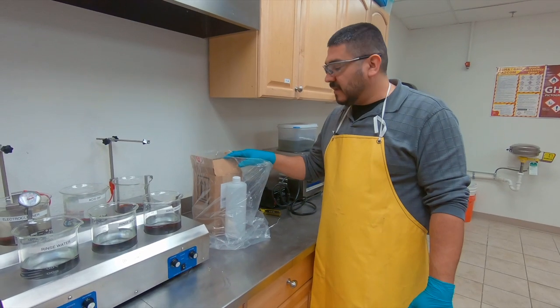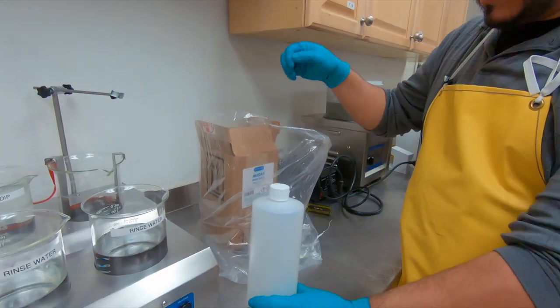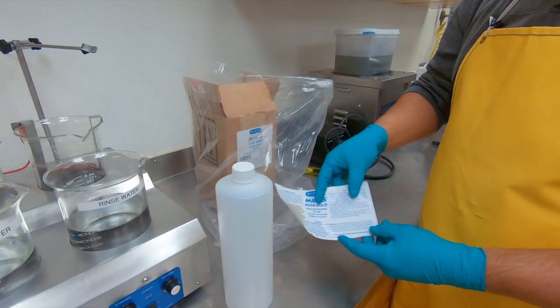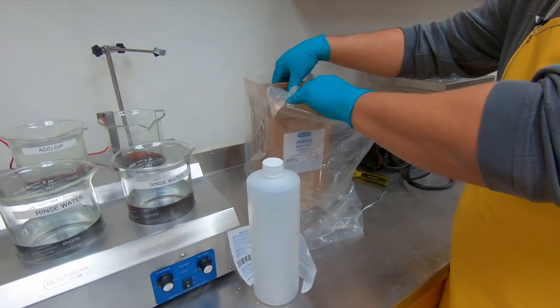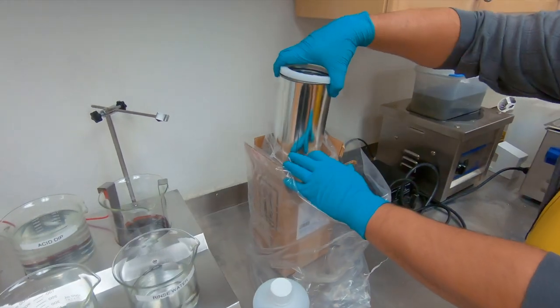Let's get started with the rose gold plating. We need to first mix up our solution. So we're going to unbox the rose gold plating solution from Midas. This is a concentrate, so we do have to dilute it. As you can see, it's got many layers of packaging for safety.